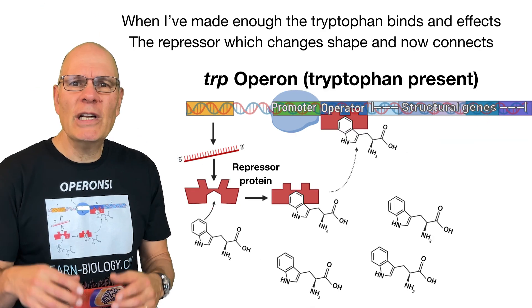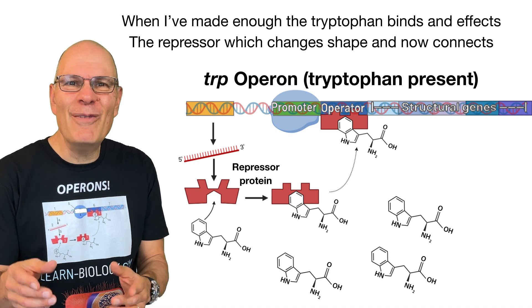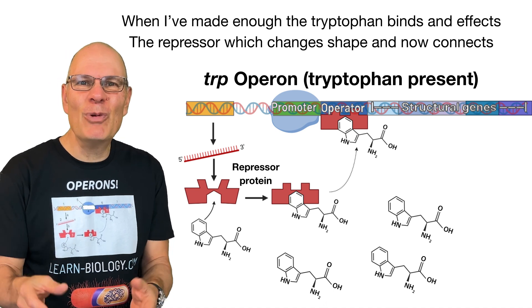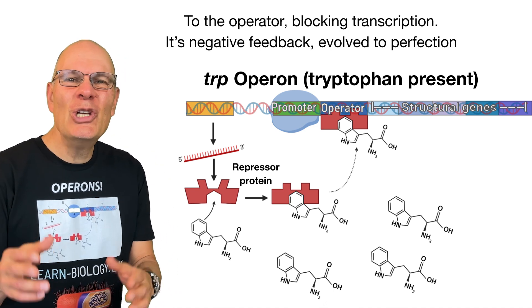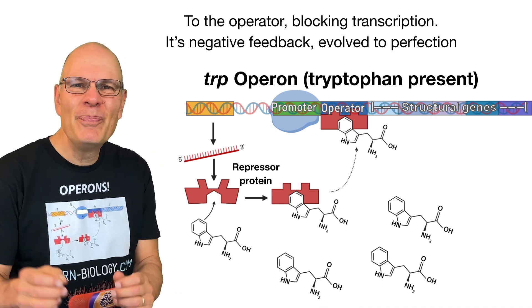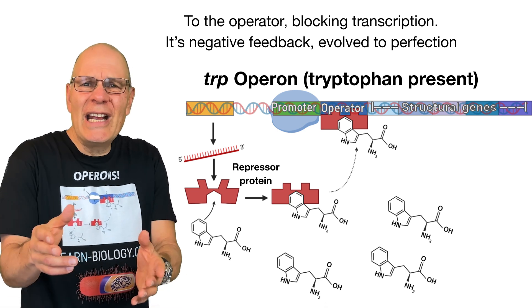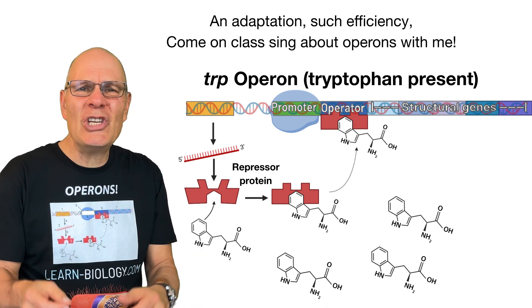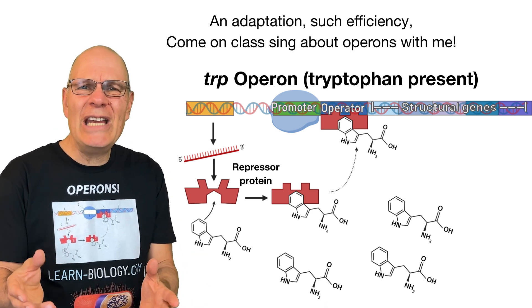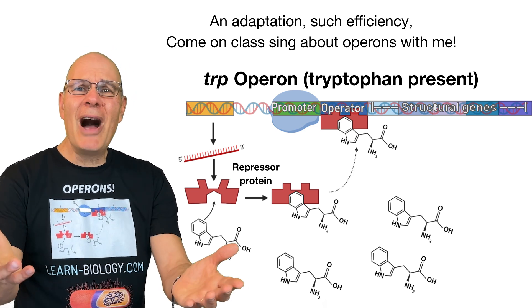So RNA polymerase transcribes the genes to make the tryptophan that I require. When I've made enough, the tryptophan binds and affects the repressor, which changes shape and now connects to the operator, blocking transcription. It's negative feedback, evolved to perfection — an adaptation of such efficiency.